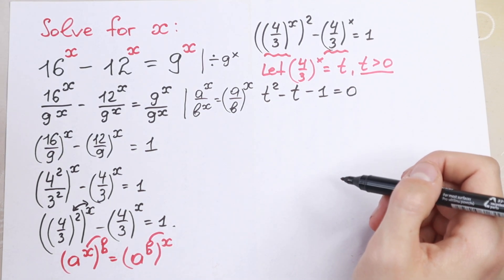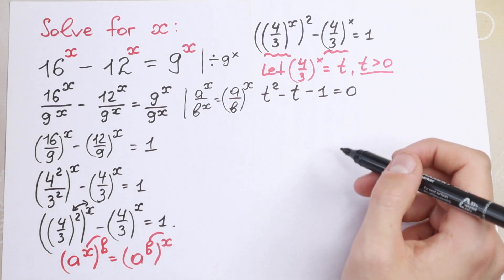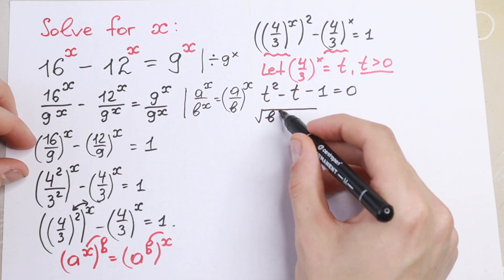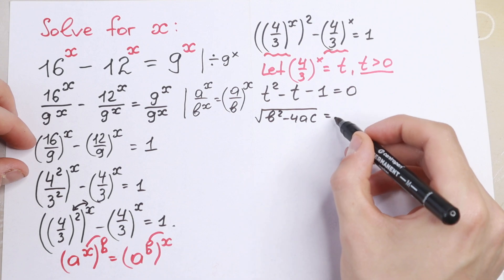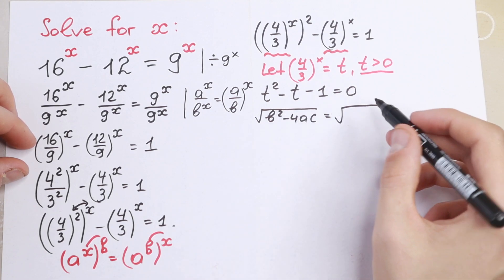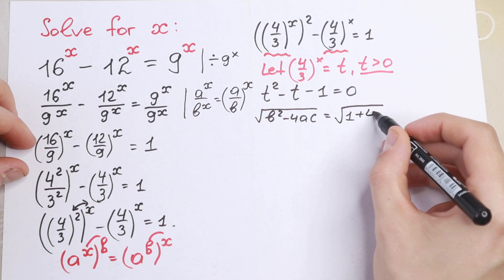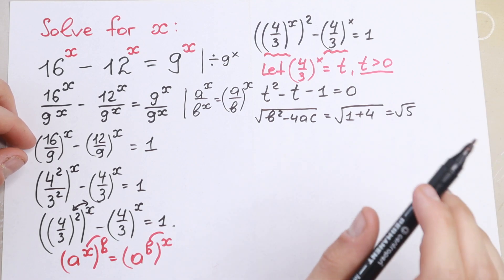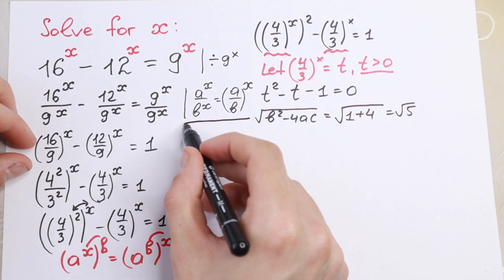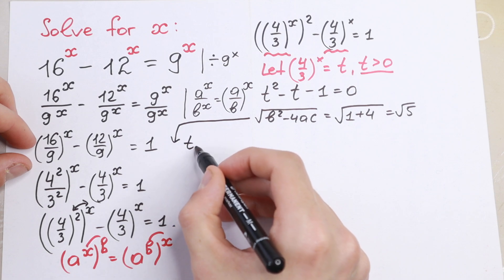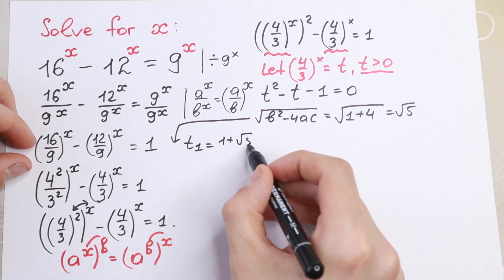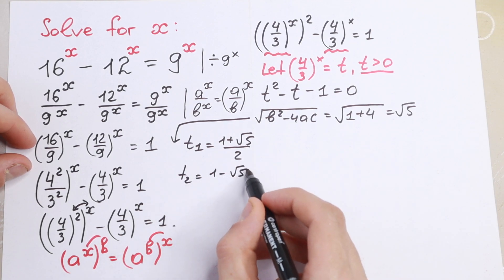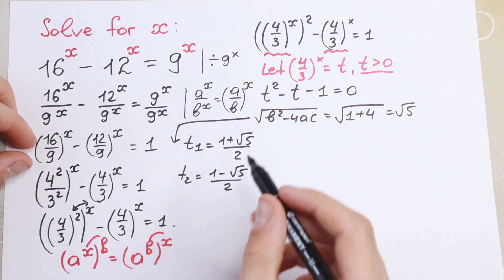Let's solve this quadratic equation. We compute the discriminant: b squared minus 4ac. We have minus b equal to 1, and 4ac for coefficients 1 and 1 gives 4. So the square root of the discriminant equals the square root of 5. We get t₁ equal to 1 plus square root of 5 over 2, and t₂ equal to 1 minus square root of 5 over 2.